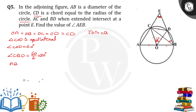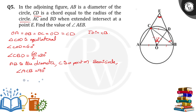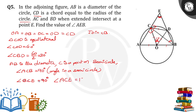Now, carefully — AB is the diameter, and D is a point on the semicircle. So we can say angle ADB is equal to 90 degrees, since the angle in a semicircle is 90 degrees.